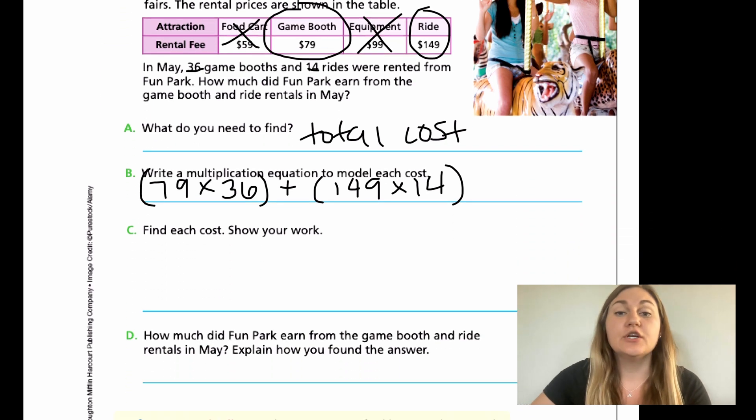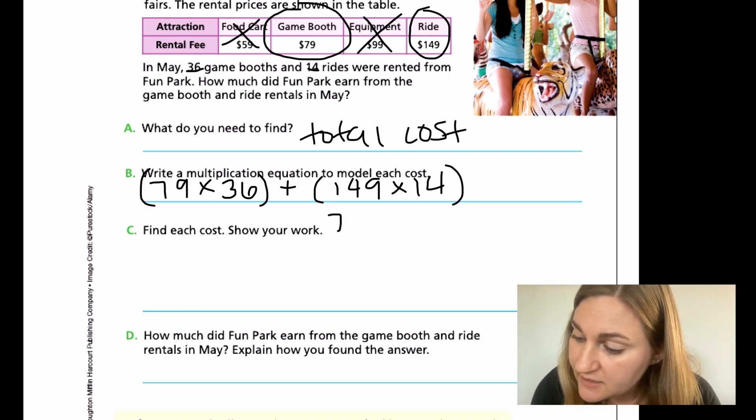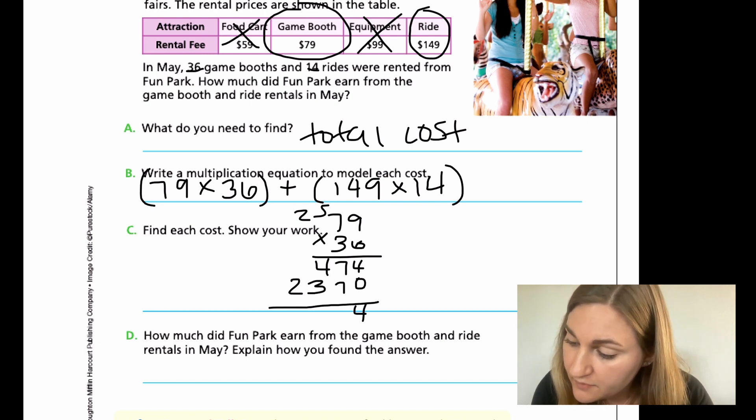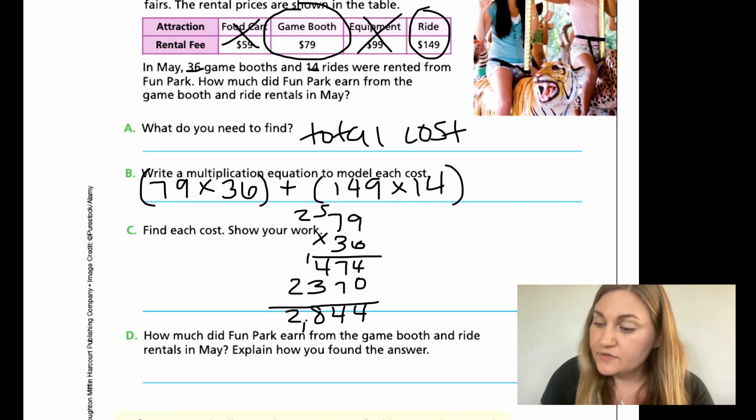So find each cost, show your work. I'm going to do two different multiplication problems and find the answer. Go ahead and work along with me. So I'm going to do 79 and 36. Nine times six is 54. Six times seven is 42 plus five is 47, placeholder zero. Nine times three is 27. And three times seven is 21 plus three is 23. Added together, I'm going to get four, 14, carry the one, seven, eight, and a two. So for just the game booths, it's going to be 2,844.